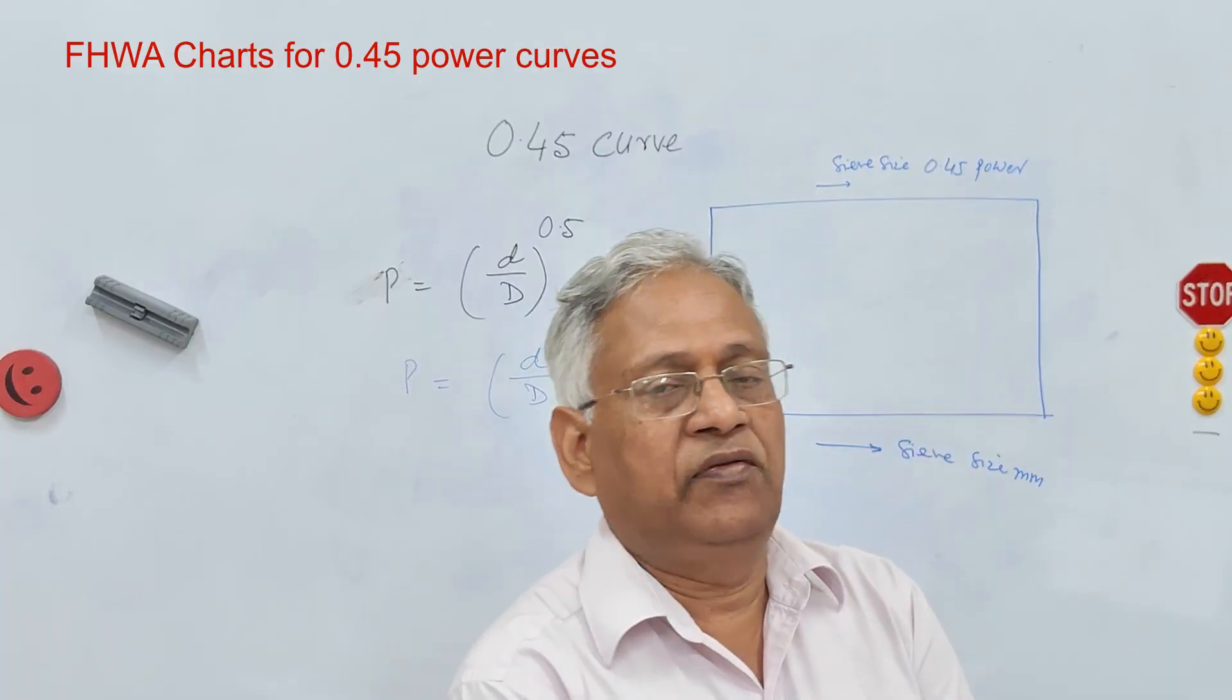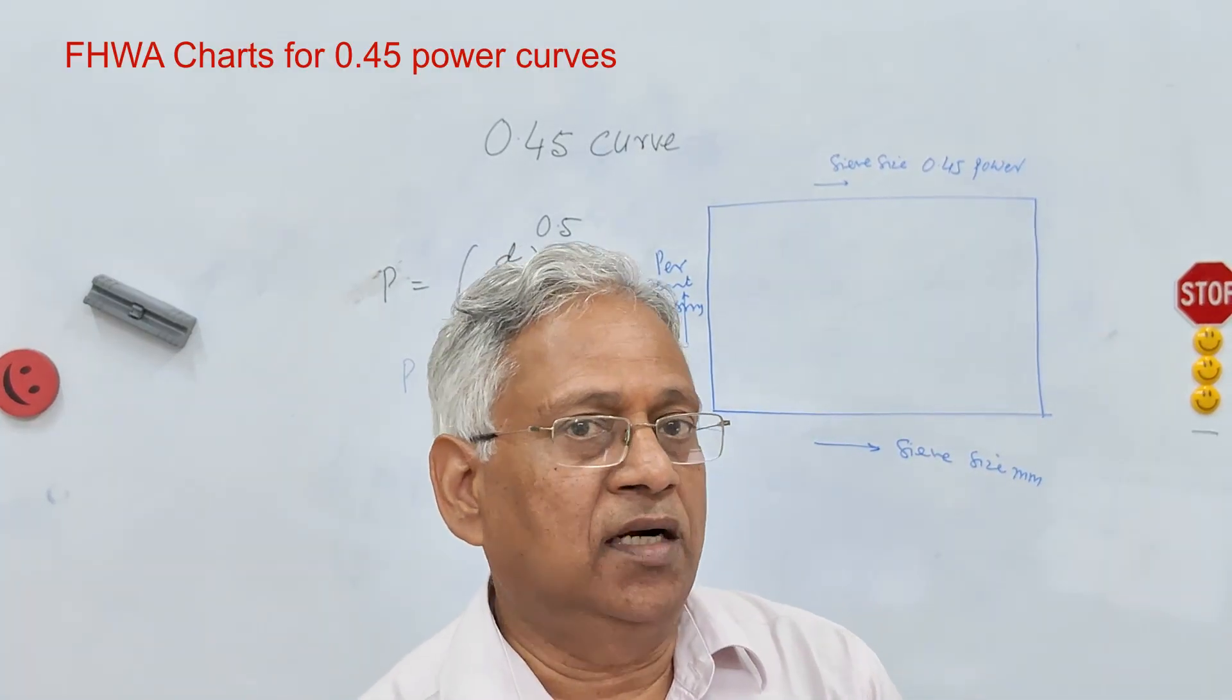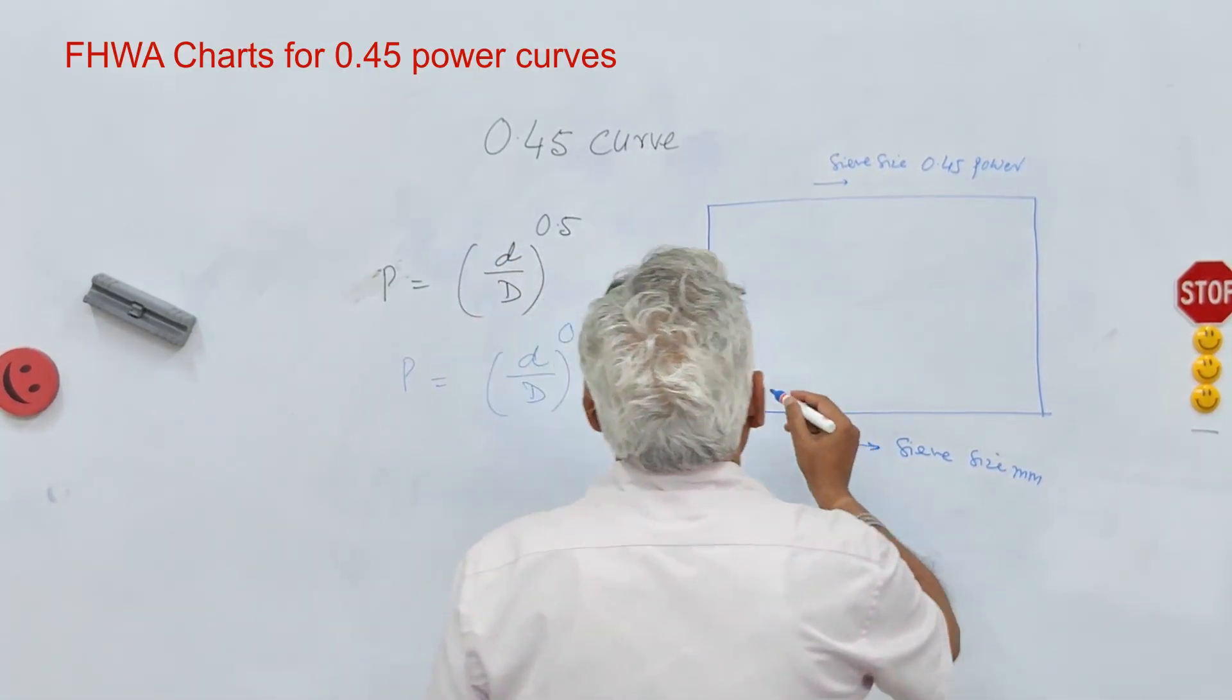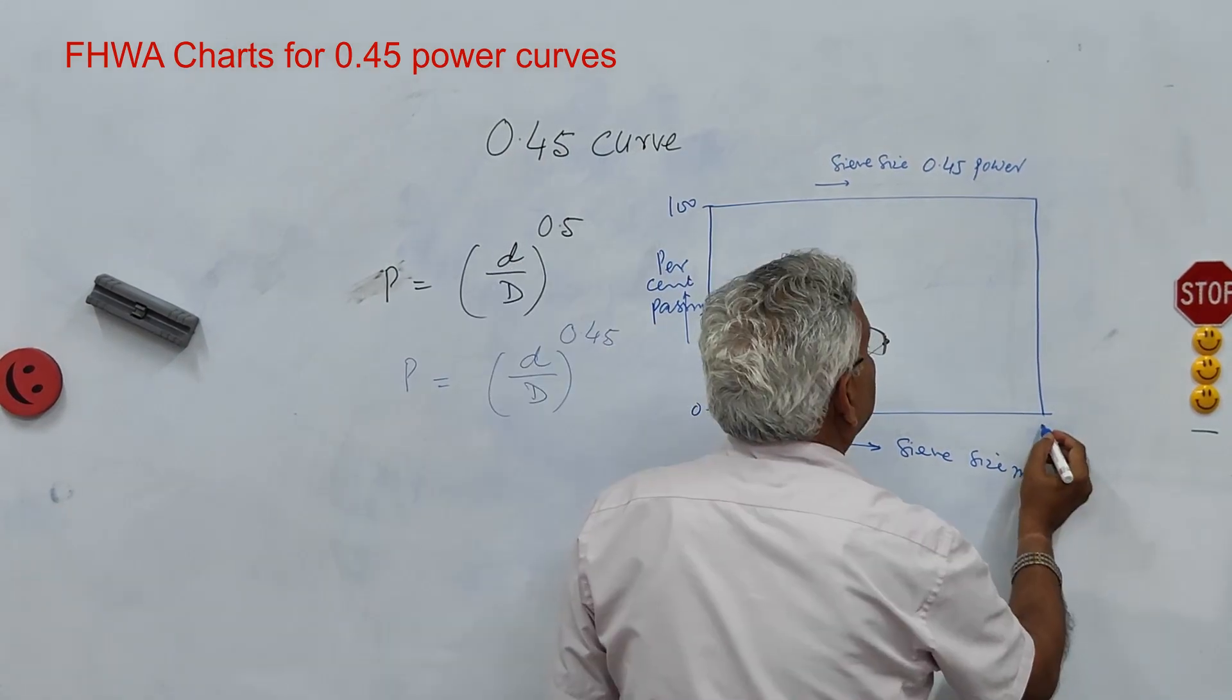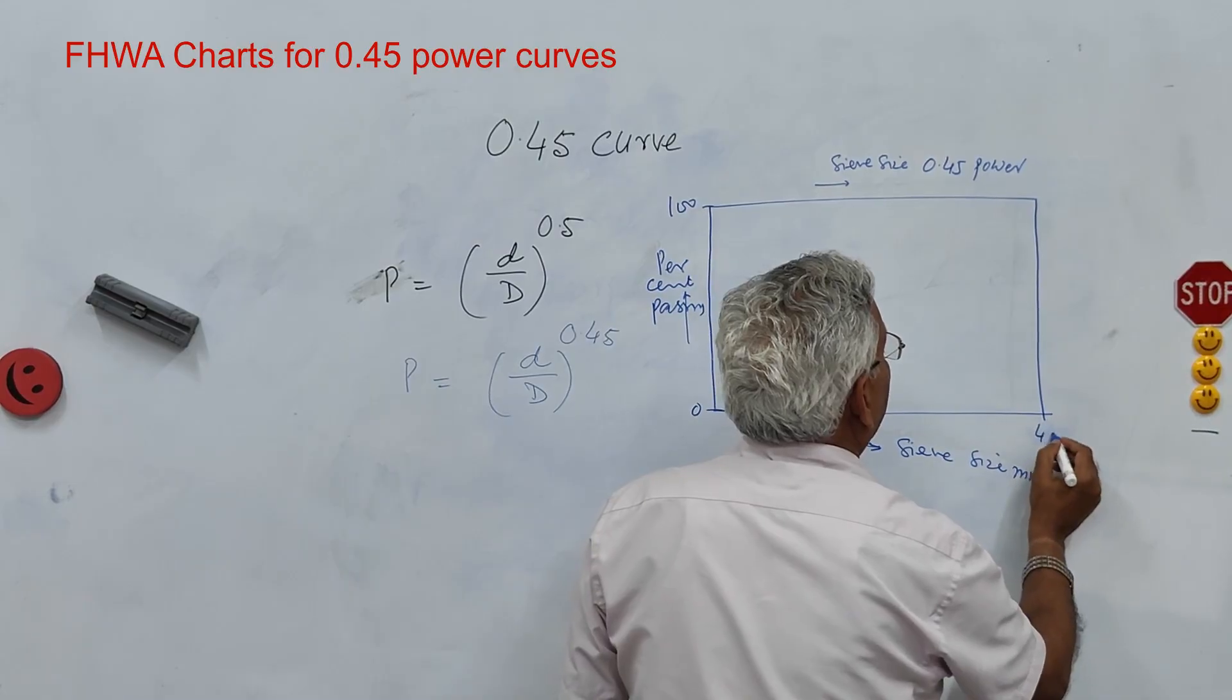So what is basically given in FHWA? They have a standard chart where you join this. This is 0% and this is 100% passing. And this is the maximum size of aggregate let us say 45 millimeter.